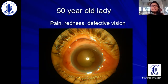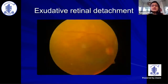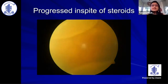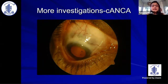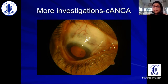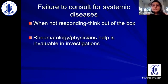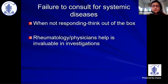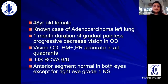A 50-year-old lady presented with pain, redness, and defective vision. She had exudative retinal detachment in the fundus that continued to progress despite adequate steroids. Investigations later found she was C-ANCA positive — the exudative detachment was not VKH as suspected, but due to vasculitis. The lesson here is failure to consult for systemic diseases. When you have made a diagnosis and the patient is not responding, think of other diagnoses. Take the help of a physician or rheumatologist to investigate further.